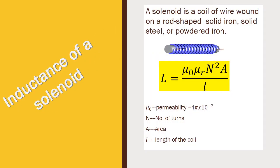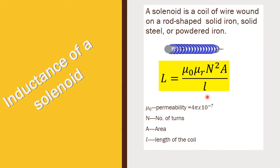Next, we are going to see inductance of a solenoid. A solenoid is a coil of wire wound on a long conductor or long solid iron. Inductance of the solenoid is given by L is equal to mu_0 mu_R N squared A divided by L. Here, mu_R is the relative permeability, mu_0 value is 4 pi into 10 power minus 7, N is the number of turns, A is the area of cross section, and L is the length of the coil.